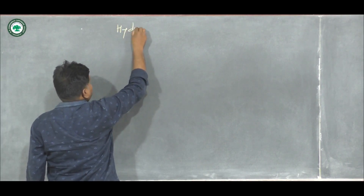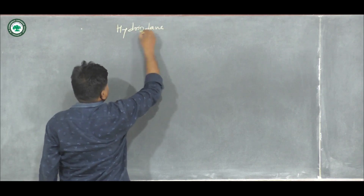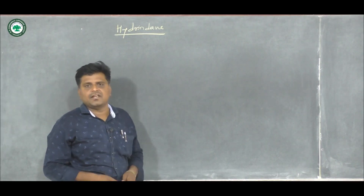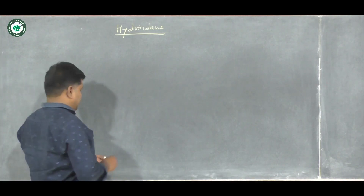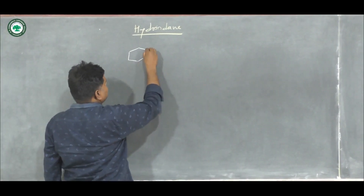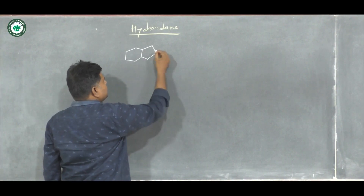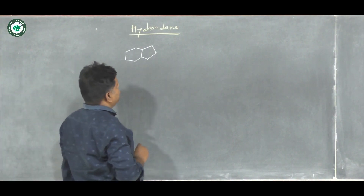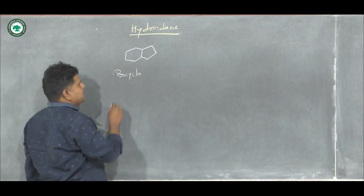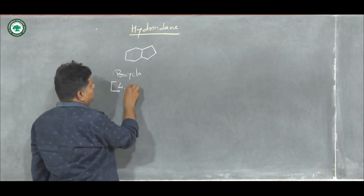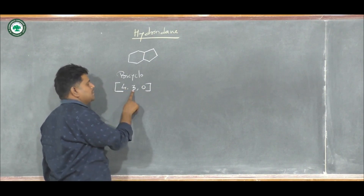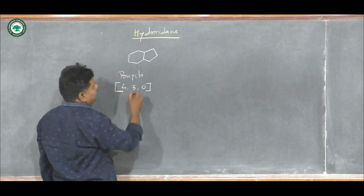So let's talk about hydrindane. This is one of the bicyclic compounds when a six-membered ring is fused with a five-membered ring. At that time we get a structure like this. Suppose this is a six-membered ring fused with five-membered ring, and its name is bicyclo[4.3.0] — that is 4 plus 3 equals 7.